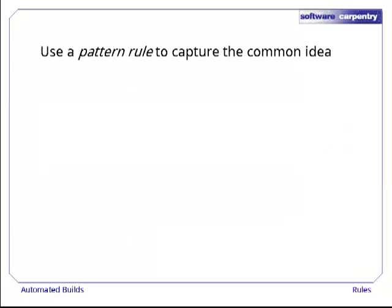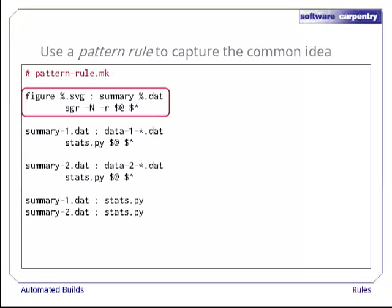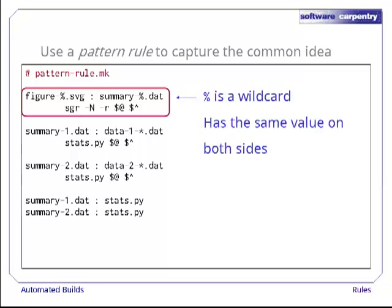The way to do this in MAKE is to use a pattern rule to capture the common idea. Here's our MAKE file rewritten to use such a rule. In this rule, percentage is a wildcard. When it is expanded, it has the same value on both sides of the rule, i.e. if it matches one on the left, it must match one on the right as well.